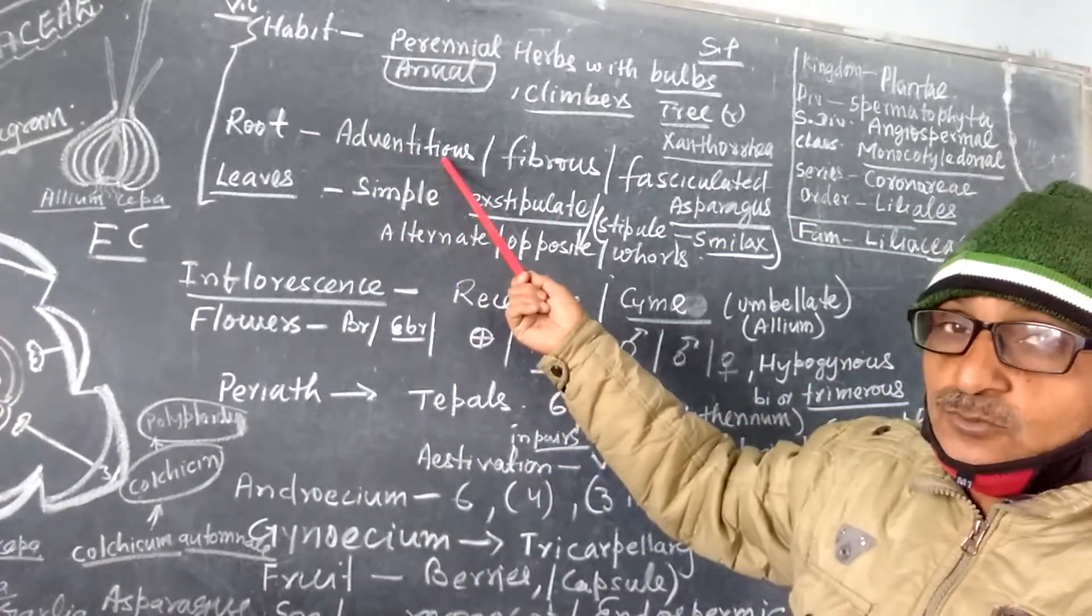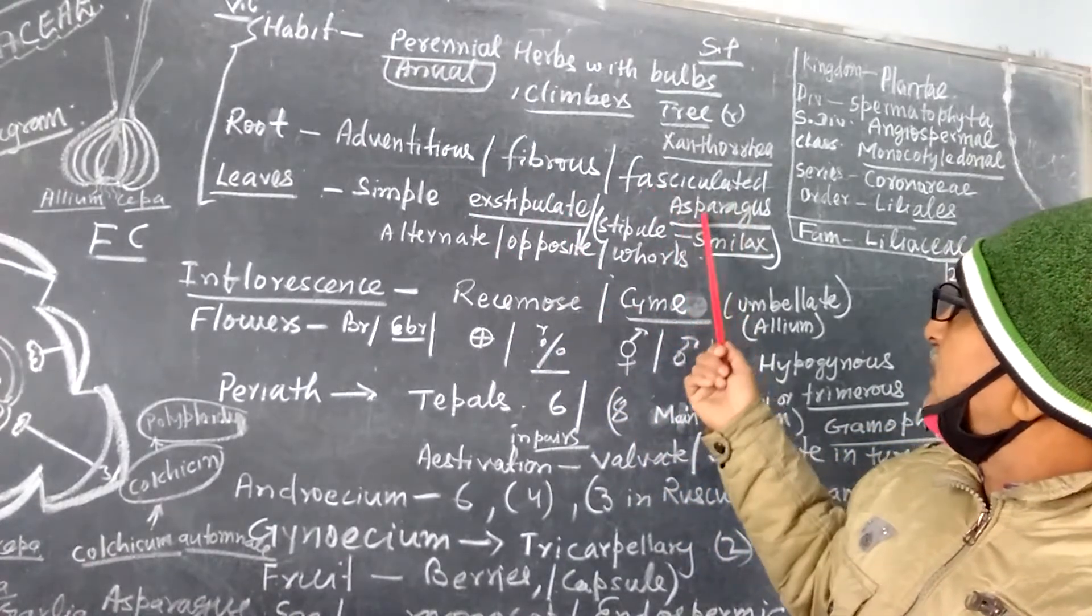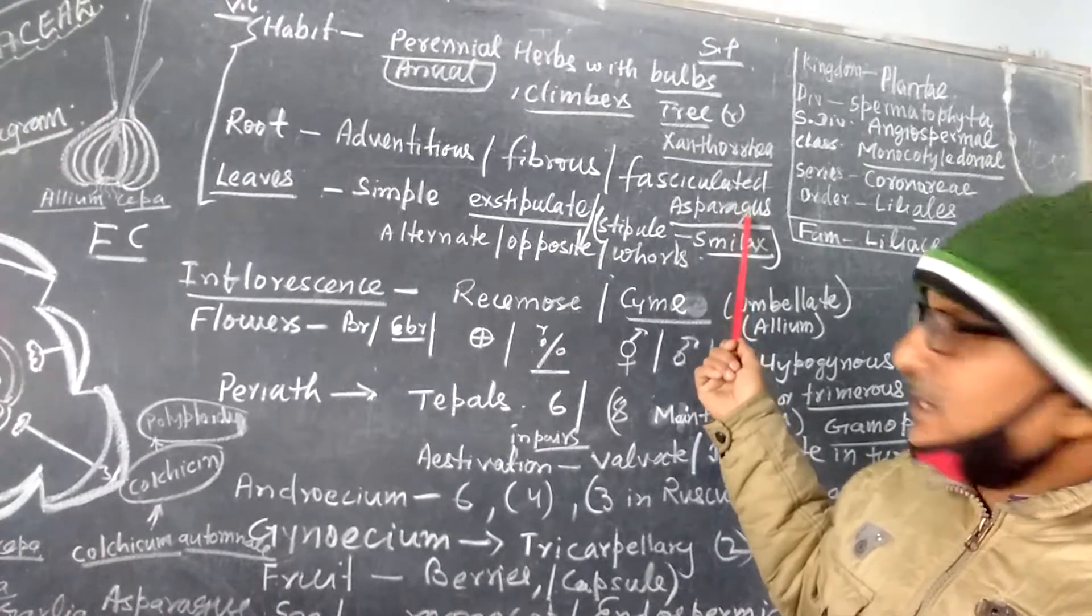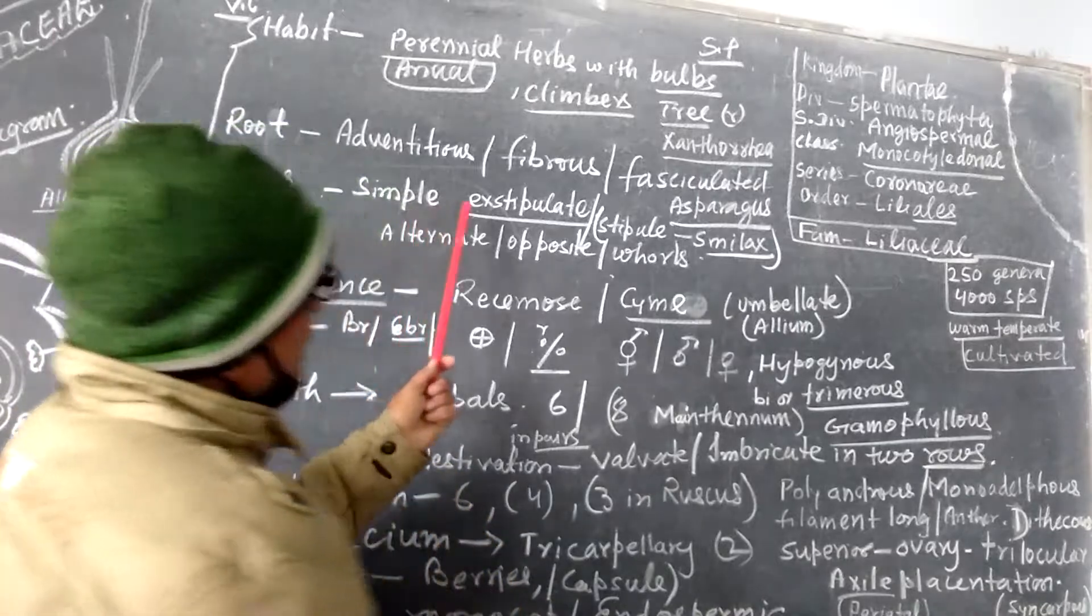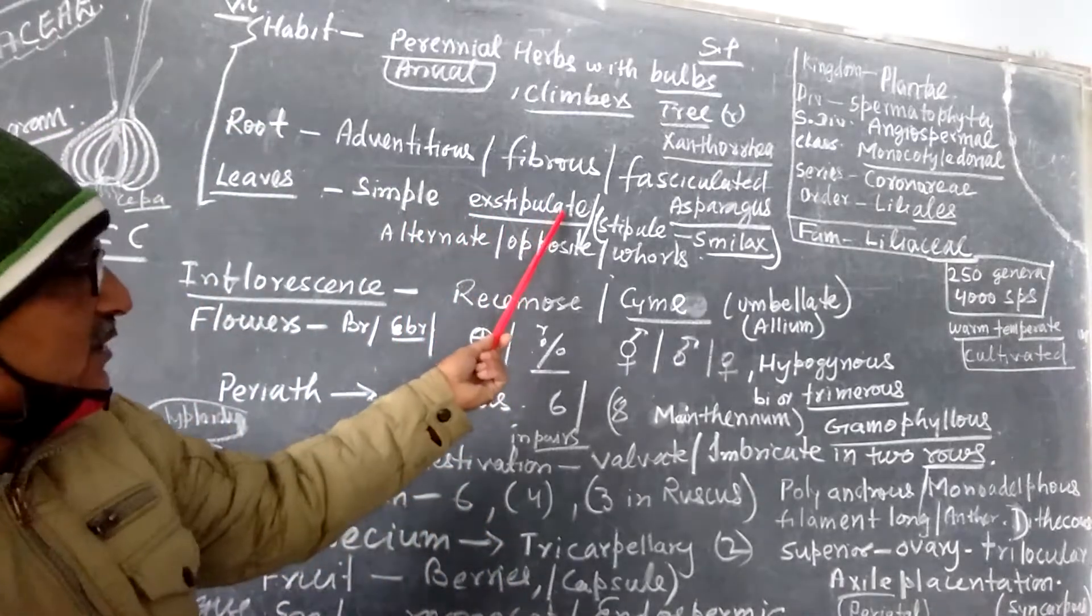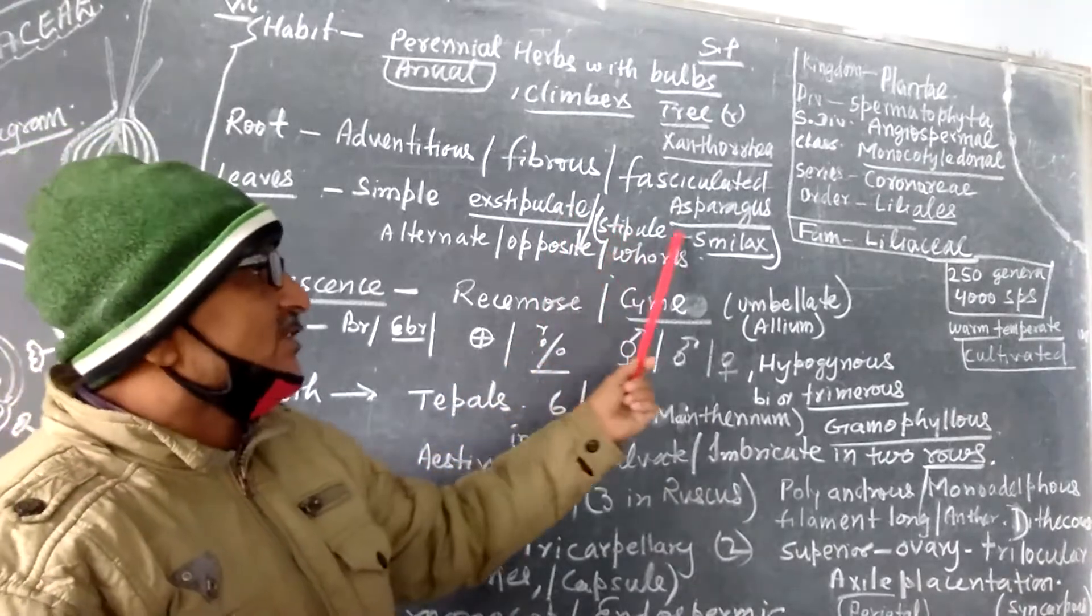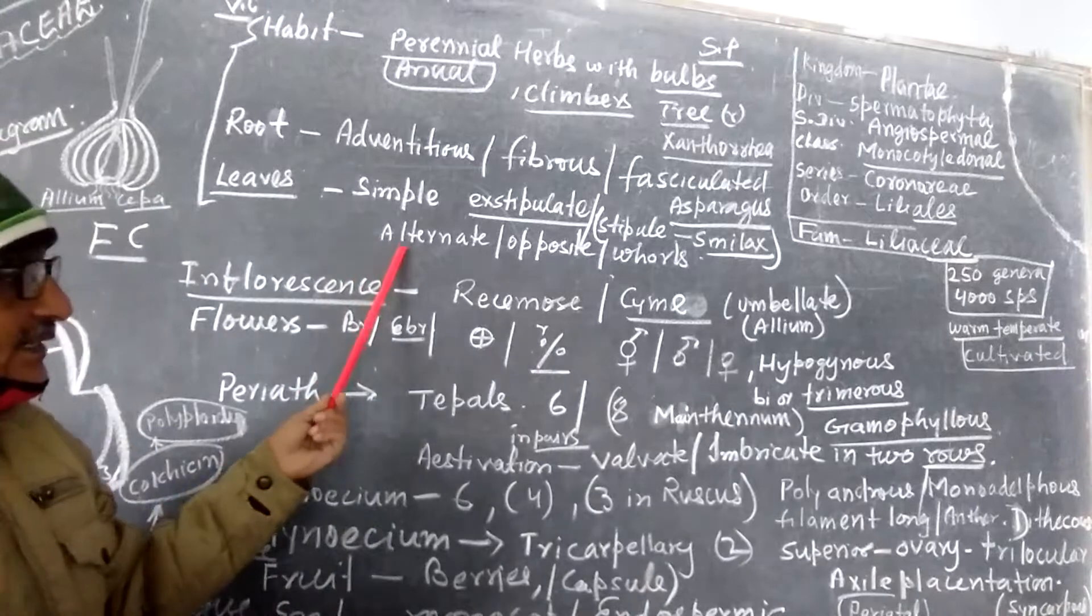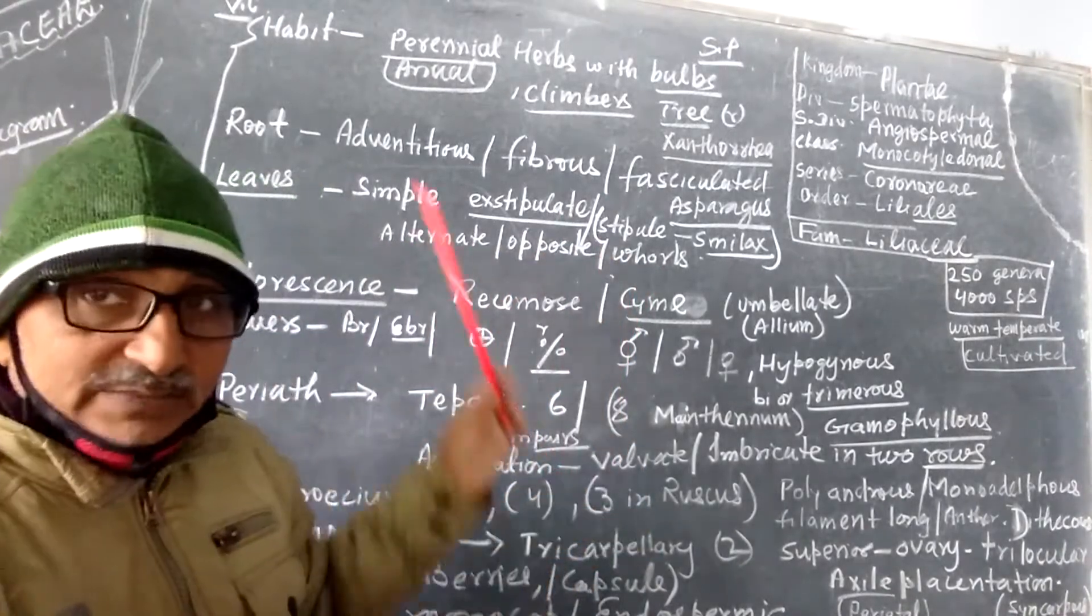Roots are adventitious roots and fibrous roots, sometimes fasciculated in Asparagus, fasciculated adventitious roots. Leaves are simple, exstipulate, stipules not present, or sometimes stipulate as in Smilax. Alternate, opposite, or sometimes in whorls. So these are the vegetative characters.